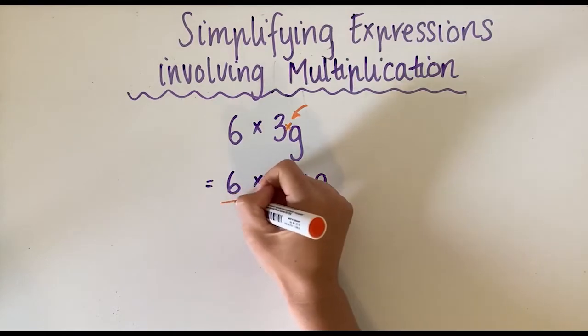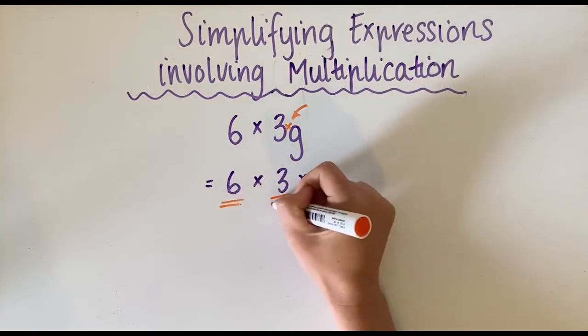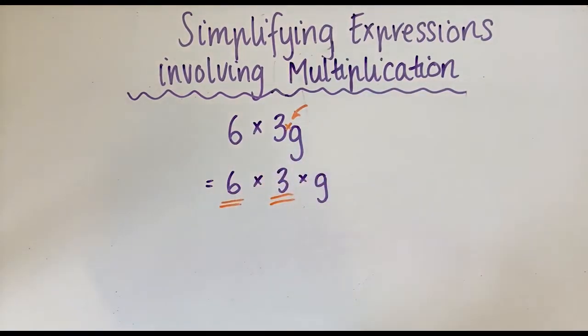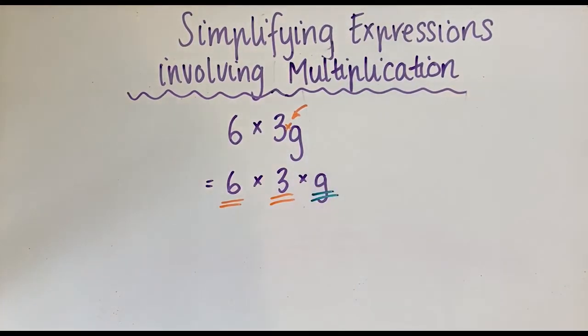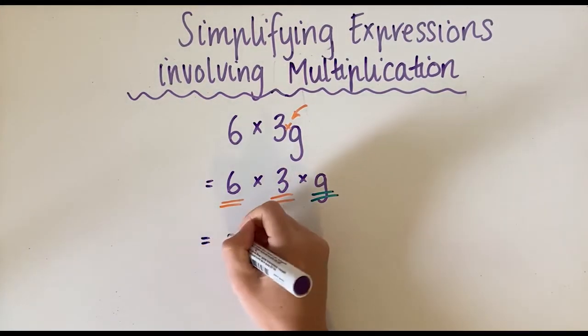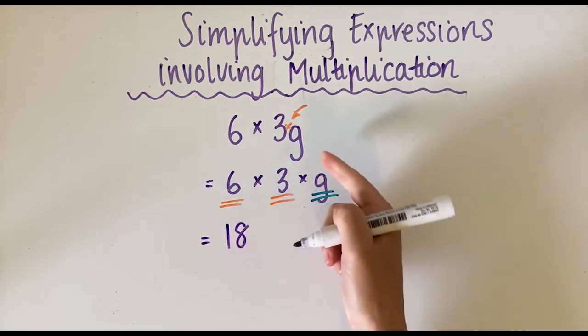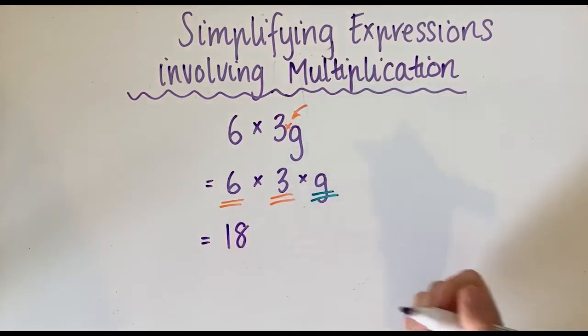We can see that the 6 and the 3 are both numbers, so they go together, and we also have a g sitting by itself. We're going to combine the 6 and the 3. So 6 × 3 is 18, but g's got nothing, no other letters to combine with, so we just put that on the end.